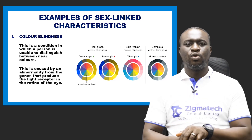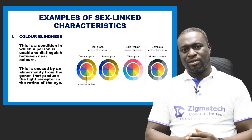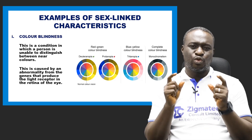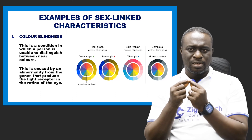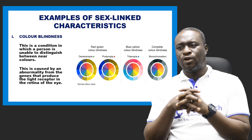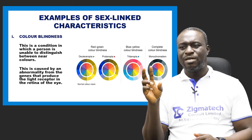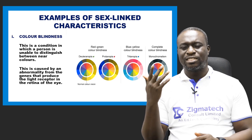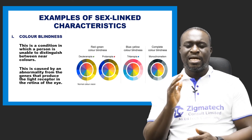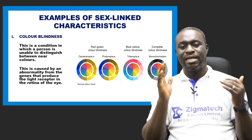The first one we're going to be looking at is what we call color blindness. Color blindness is actually a condition in which a person is unable to distinguish between near colors. You can see on the screen we have near colors. When a person has complete color blindness, the person is not able to see some colors — everything almost appears to be black and white. So when a person is color blind, it simply means the person is not able to differentiate or distinguish between near colors.